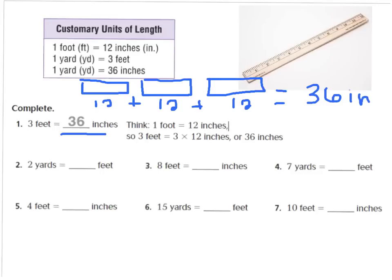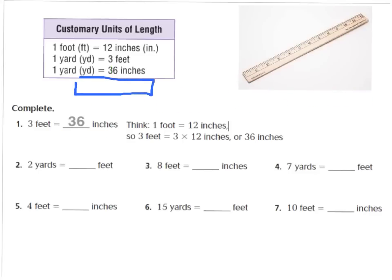Now let's look at number 2. It says that 2 yards equals how many feet? I can see by my chart that 1 yard equals 3 feet. So if I have 2 yards, I can draw my model: here's 1 yard, and I know 1 yard equals 3 feet.